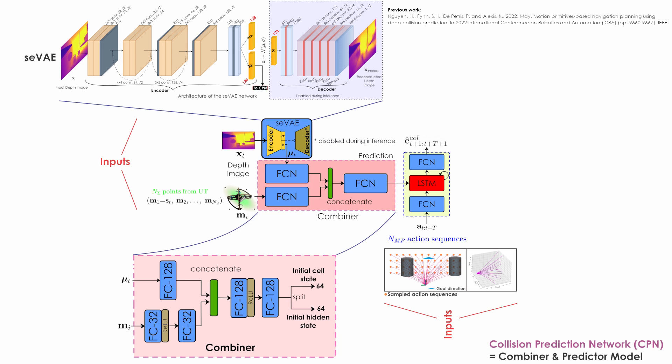This is done by feeding the compressed latent representation and the partial state of the robot to the combiner network containing several fully connected layers to derive the initial hidden state and cell state for a long short-term memory, abbreviated as LSTM.